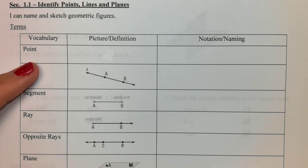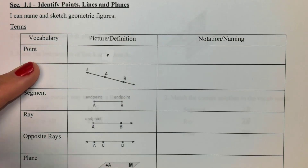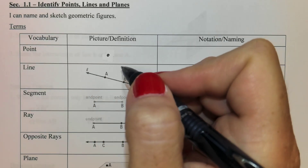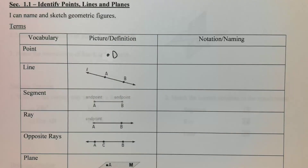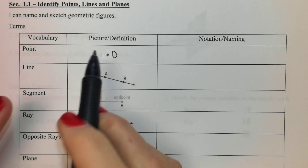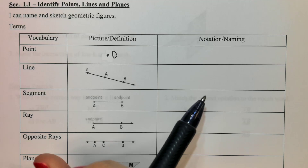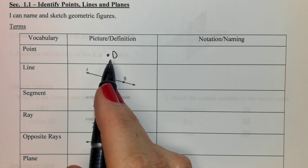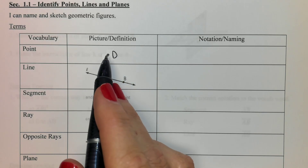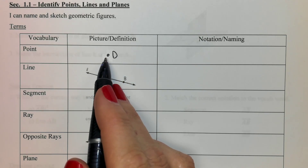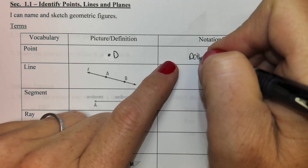The first word we're going to talk about is a point. If I asked anybody to draw a point, you guys would all draw a dot, which is great. That's what it is. In geometry, we're going to add a capital letter to it — I'm going to use D. The definition of a point is that it has no dimension. Points have no depth or width; they just exist as a location. The notation we use: we would say this is point D.